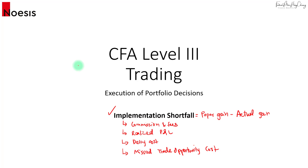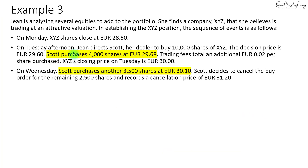In this last part of the video on implementation shortfall, we'll look at the scenario where we actually buy shares on the day we put in the order, and also bought shares on the following day before cancelling the order. For Gene's case on the XYZ shares, Scott purchased 4,000 shares at 29.68 on Tuesday when Gene put in the order, and on the very next day on Wednesday, Scott bought another 3,500 shares at 30.1 before cancelling the remaining orders of 2,500 shares.